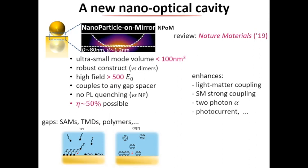One concern is that putting an emitter very close to metal traditionally leads to quenching, where all the emission goes into exciting electrons in the metal. But that's not true in these systems, which are very impressive waveguide emitters - radiation competes very strongly with absorption, so emission efficiencies of about 50% are possible. We can put TMDs, polymers, perovskites, and magnetic materials in the gap, but today I'll focus mostly on molecular materials using self-assembled monolayers, which make very robust nanometer-scale spacers.